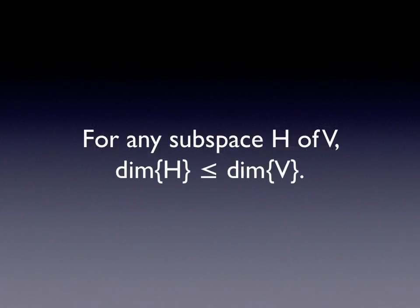Here's another theorem: for any subspace H of V, the dimension of H is less than or equal to the dimension of V. That's because we're taking a subset of the vector space, so there's no way the dimension can be any larger than V. We might need even fewer vectors from V to span all of the subspace H.